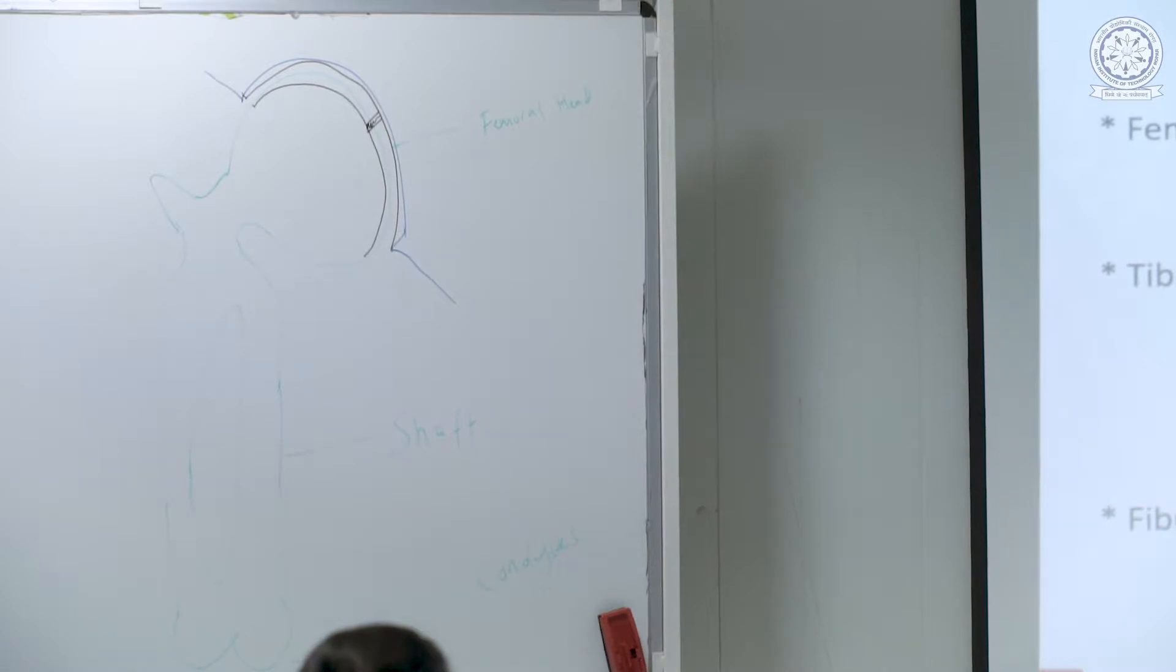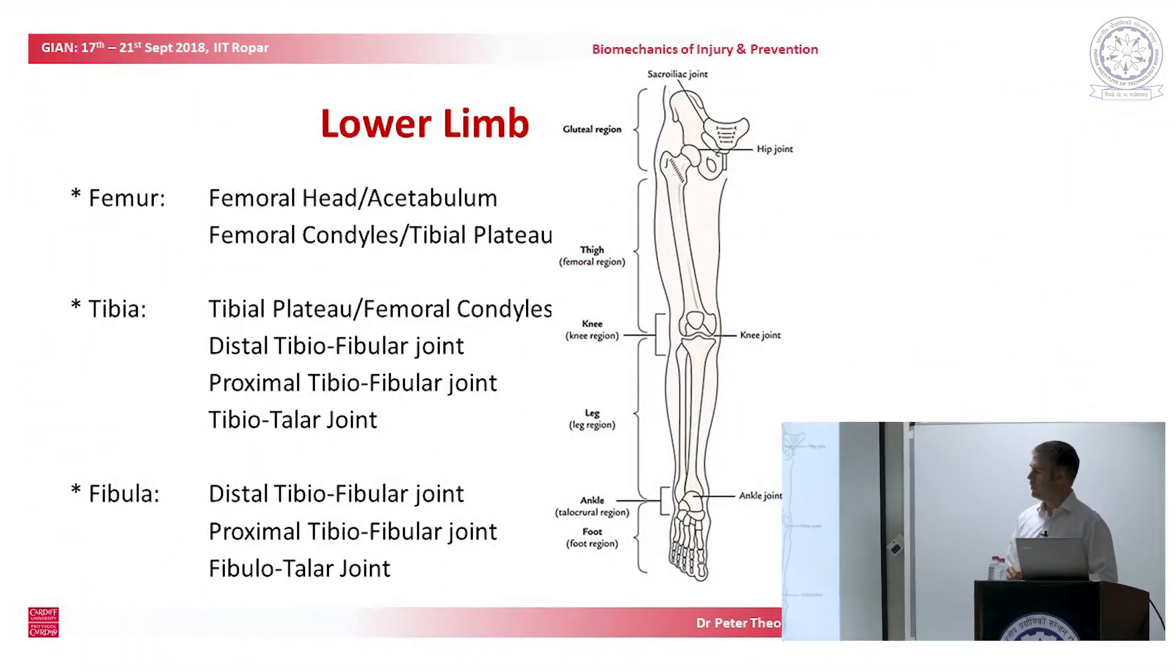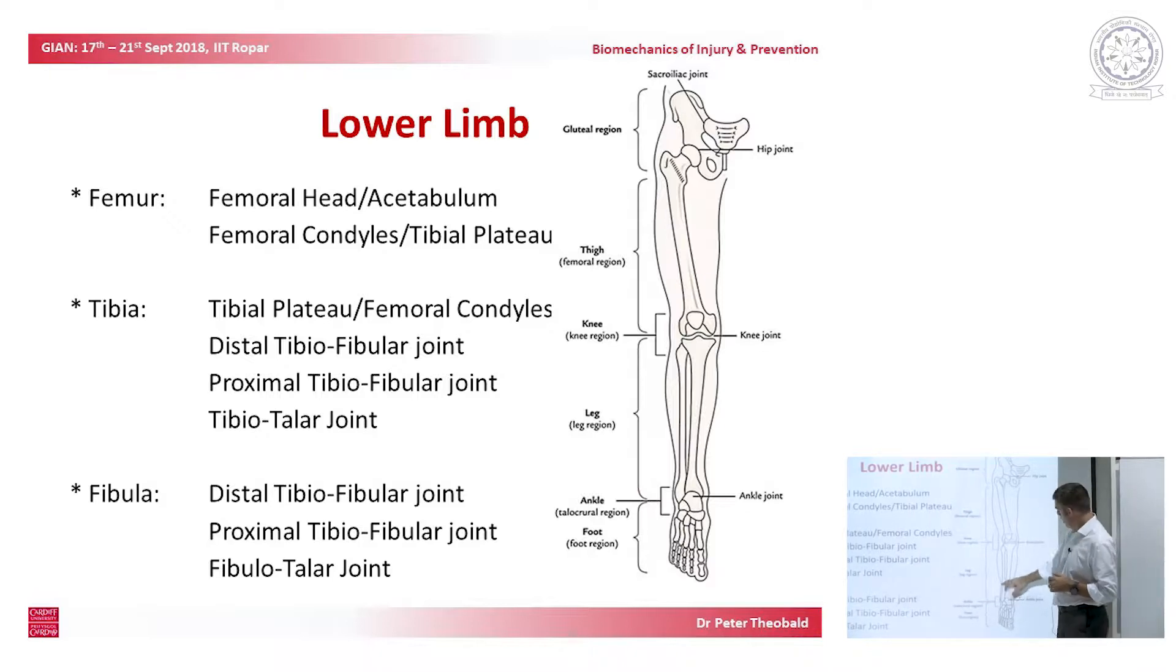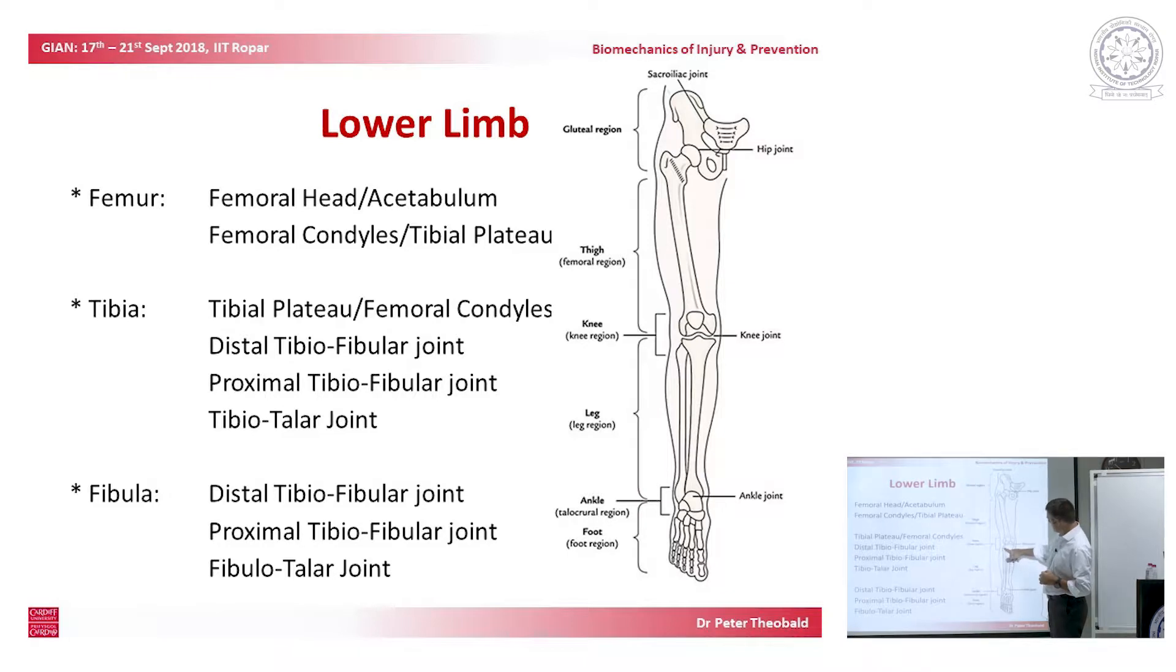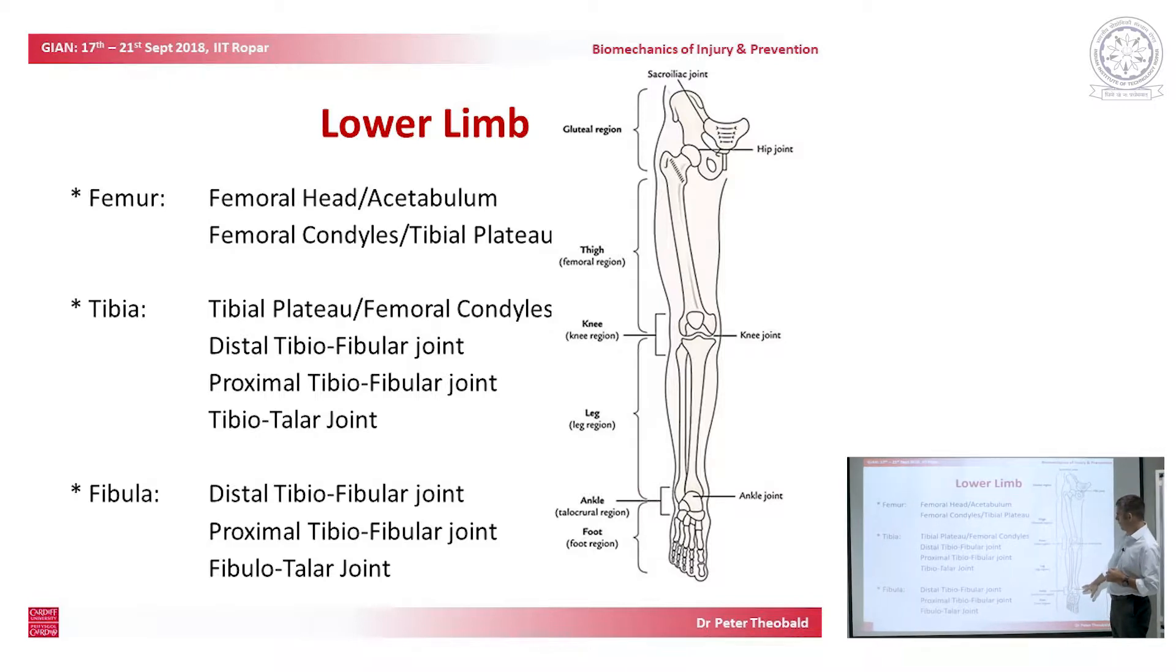At the bottom, we have the shaft of our long bone, and then we have the condyles at the bottom. We have a big gap in the middle of the long bone, which is our canal. The femoral head sits within the acetabulum of the pelvis, and both surfaces are lined by articular cartilage. Here we've got two new terms, distal being the distance joint, proximal being the nearer joint.